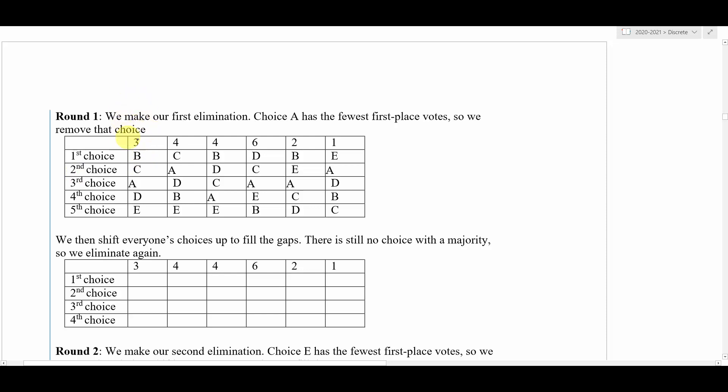We're going to take A and we're just going to cross it off the preference ballot wherever we see it, and then we're going to pretend like A never existed, so we're going to move everything up. The D and the E are going to move up, the D, B, and E will move up in this column, and so forth and so on.